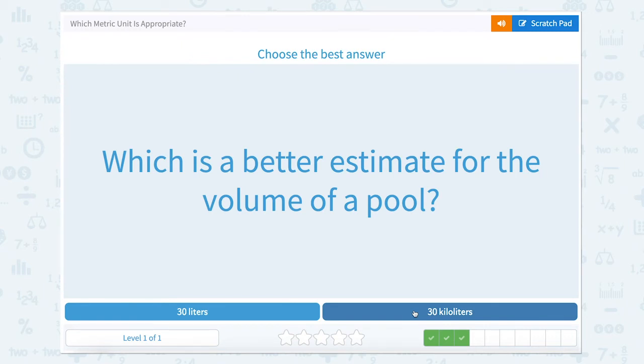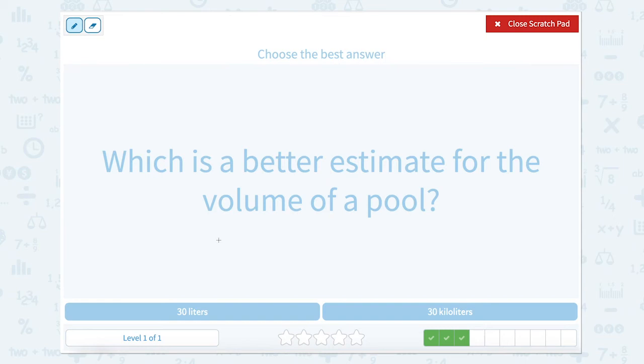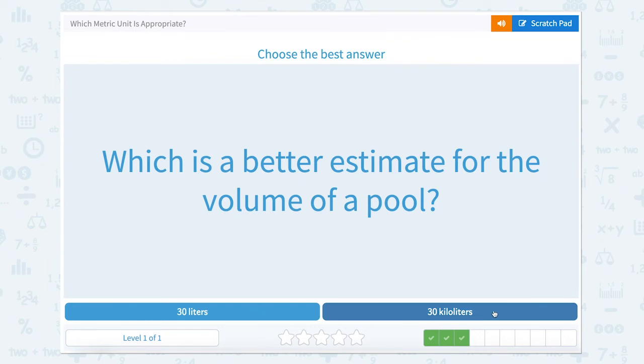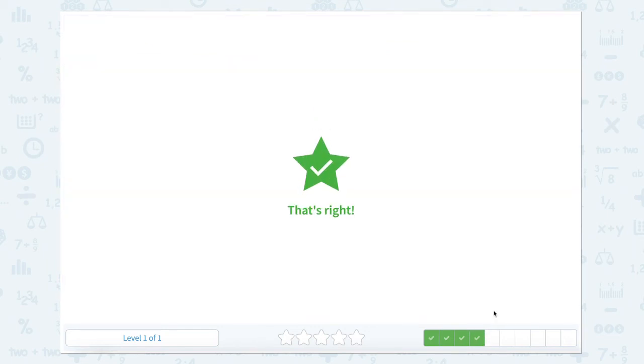What is a better estimate for the volume of a pool? Well, would a pool be 30 liters or 30 kiloliters? Remember we said earlier that that soda pop bottle, like the larger bottle that you might get if you order a pizza or something would be two liters. So would you rather have like 15 of those things, of those soda pop bottles in a pool or 30 kiloliters? Kiloliters. There's a lot more water in that pool.